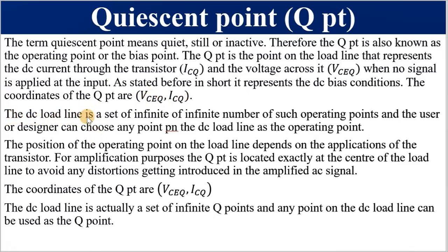A DC load line joins IC(saturation) and VCE(cutoff). It is a set of infinite operating points, and the user or designer can choose any point along the load line. The choice depends on the application. For a transistor as an amplifier, we choose the center of the load line. For a transistor as a switch, we choose the point near saturation and the point near cutoff to represent the transistor when it is on and off respectively. The two coordinates of the Q-point are quiescent collector current and quiescent collector-to-emitter voltage.